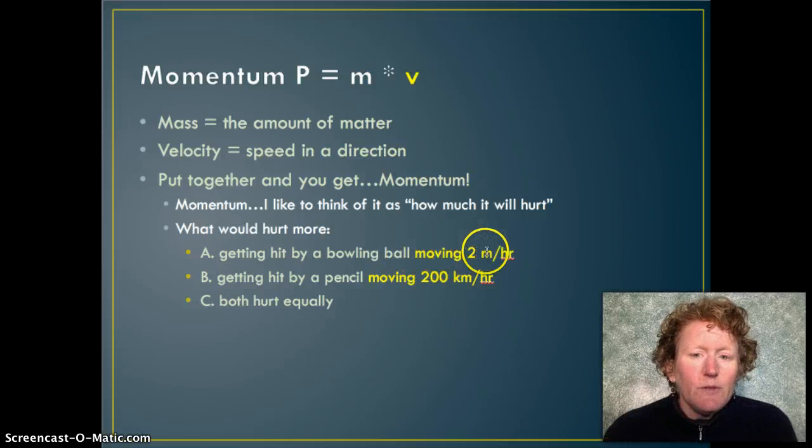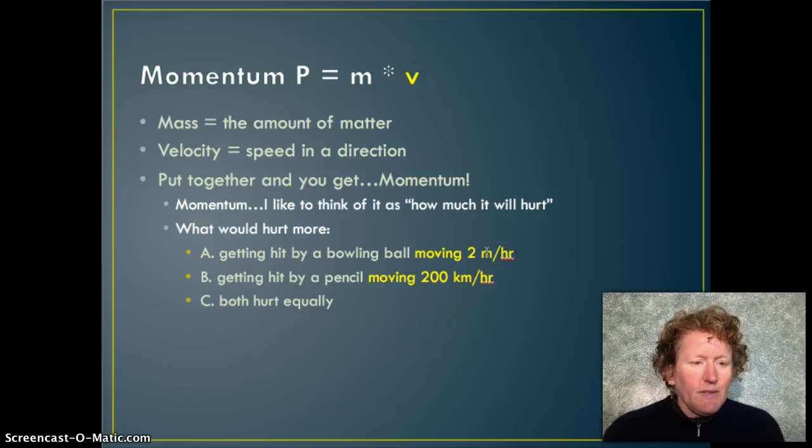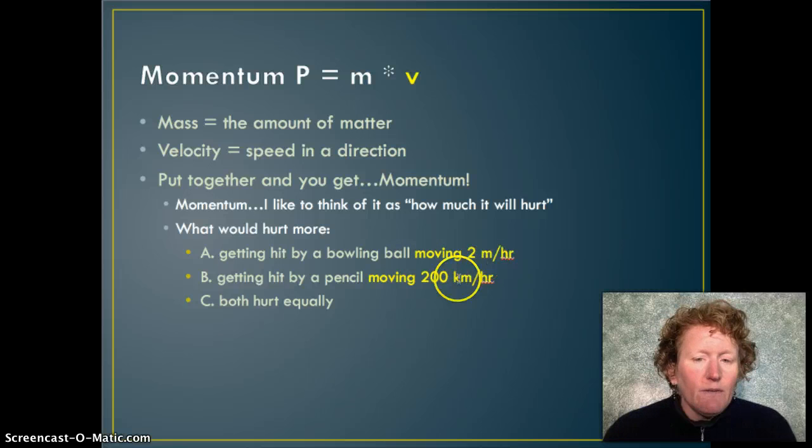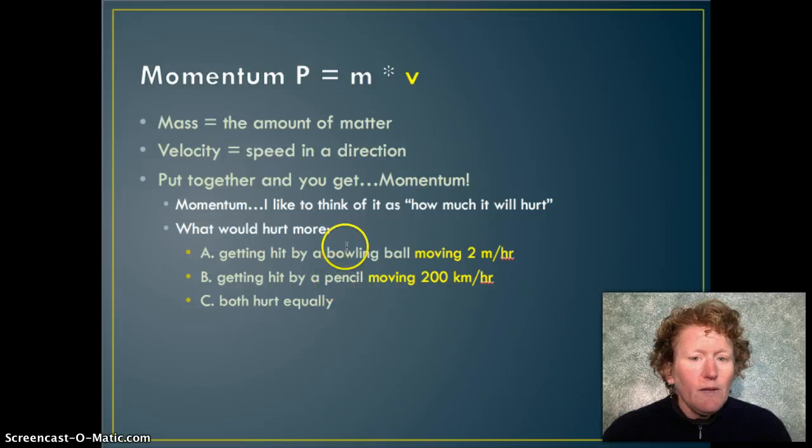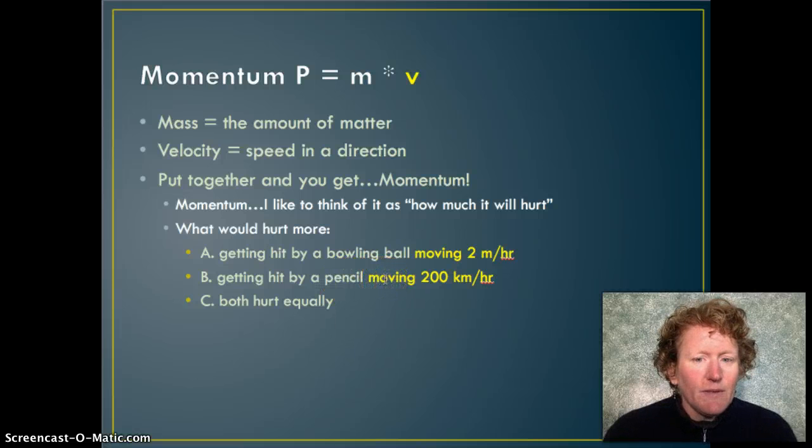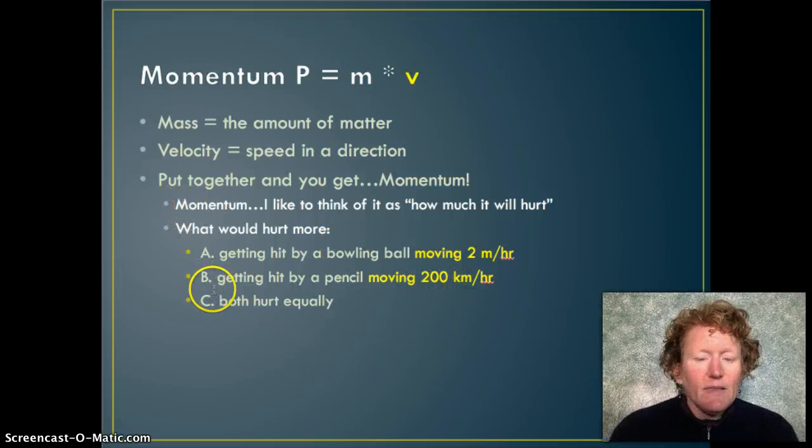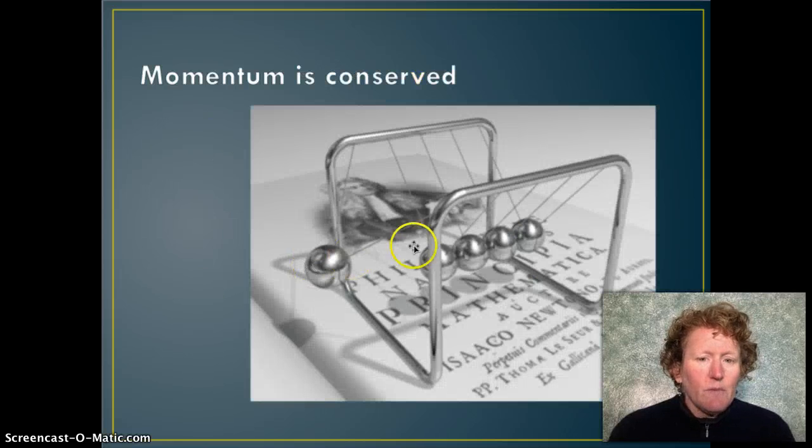You need to know the velocity. If the bowling ball is moving 2 meters an hour, that's approximately how long your couch is. If a bowling ball moves the length of your couch in an hour, versus a pencil moving 200 kilometers per hour, that's faster than a lot of Indy 500 cars, which one's going to hurt more? The pencil moving quickly or the bowling ball moving slowly? I think we'll both agree that the pencil moving very quickly is going to hurt more in this case because it has a lot more velocity, even though it has less mass than a bowling ball. So it's not always mass that controls momentum.